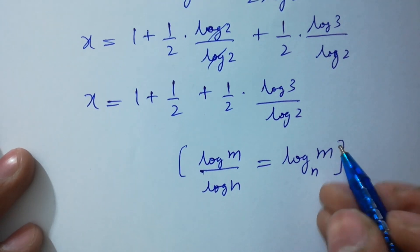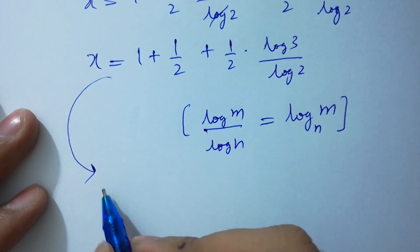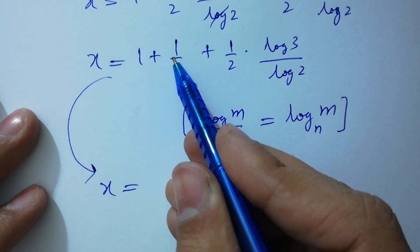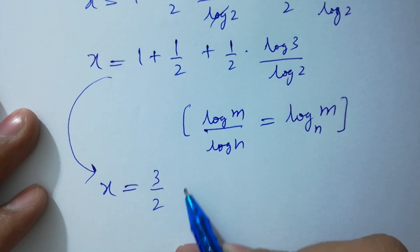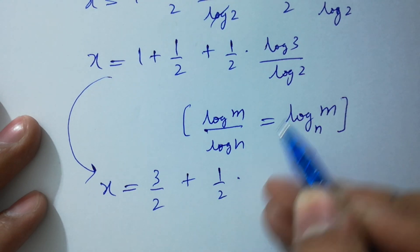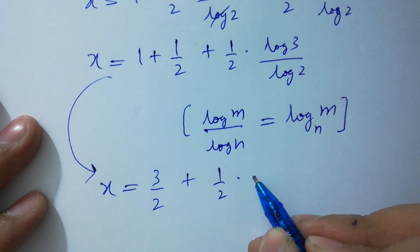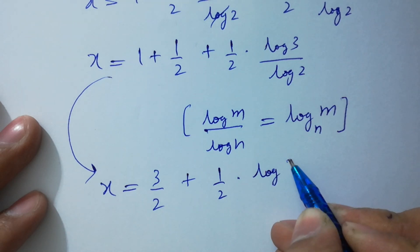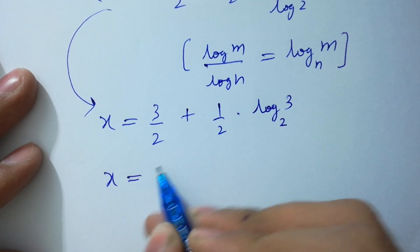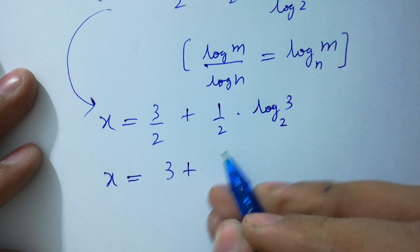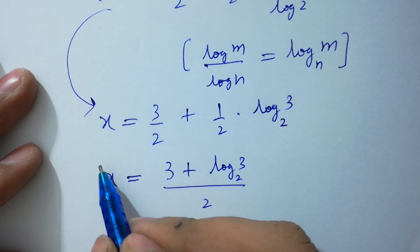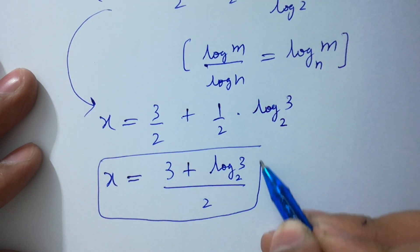So x will be equal to 1 plus one half plus one half times log 3 over log 2, giving log 3 to the base 2. Therefore x equals 3 over 2 plus log 3 to the base 2 over 2, which is our value of x.